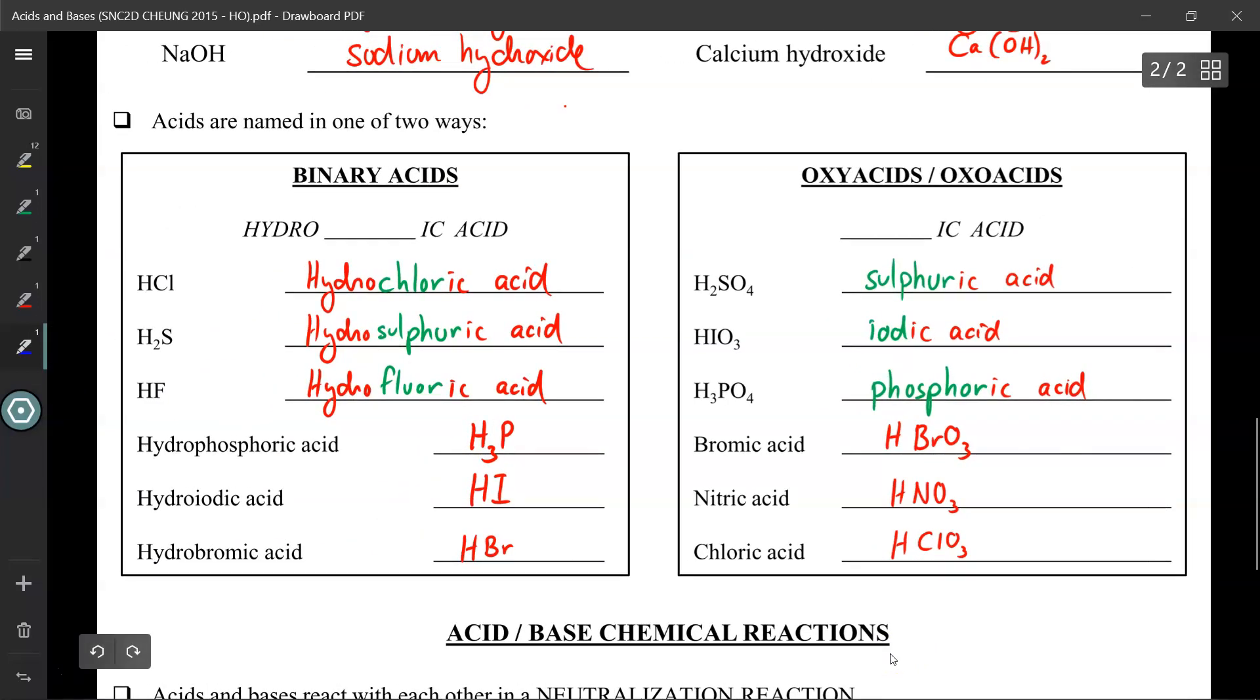You'll notice that when it comes to binary acids, we only deal with two elements at a time, while oxyacids must deal with the polyatomic ions that contain oxygen inside. Binary acids have the prefix hydro, while oxyacids do not have the prefix hydro, otherwise everything else about it is the same - ic acid.